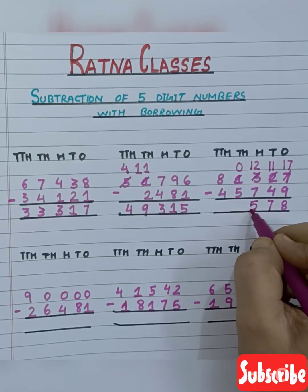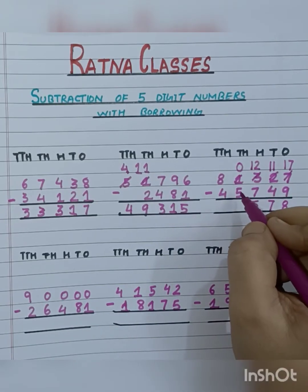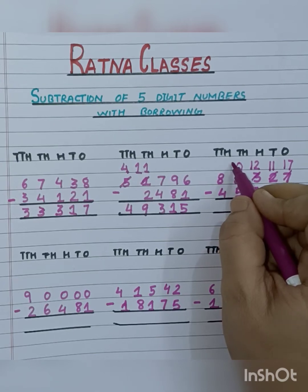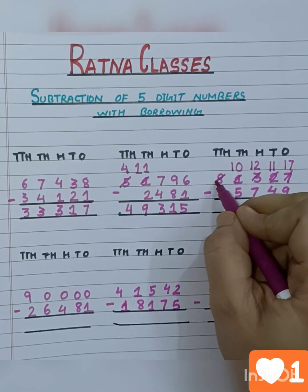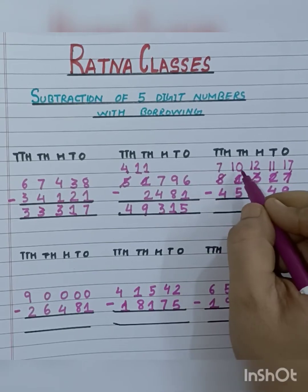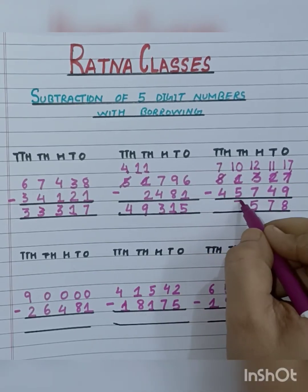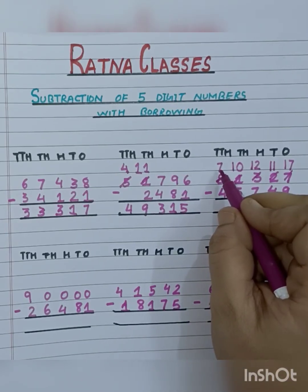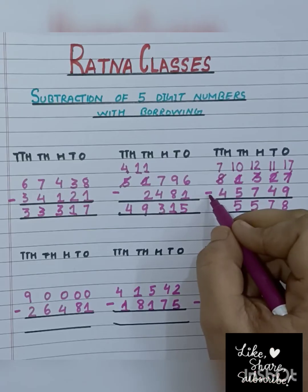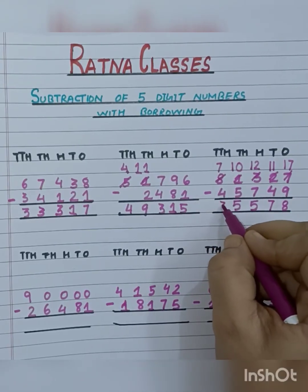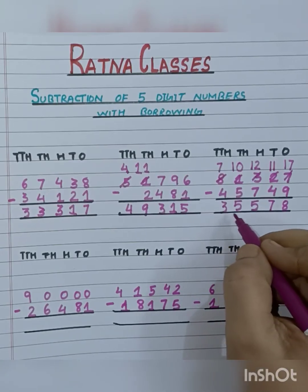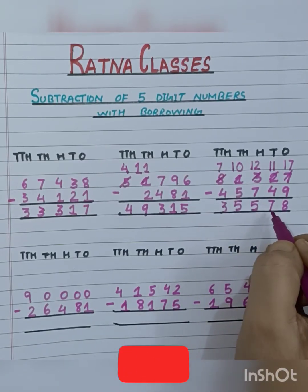So we will write 5 here. Now again we can't subtract 5 from 0, so we will take borrow from the 10,000 place: 0 will become 10 and 8 will become 7. 10 minus 5 is 5. And the last number at the 10,000 place: 7 minus 4 is 3. So we got our answer, that is 35,578.